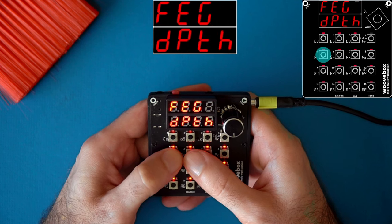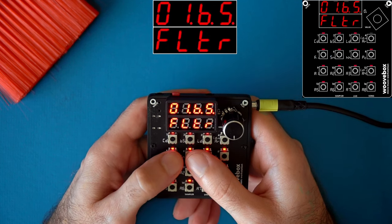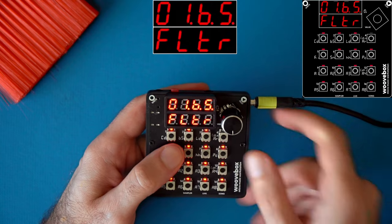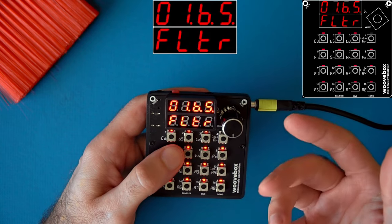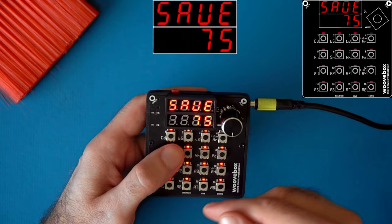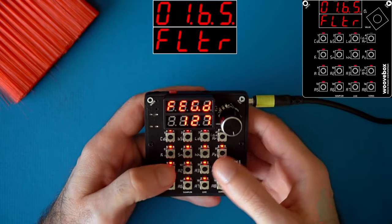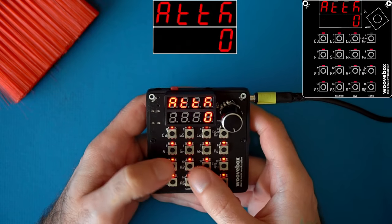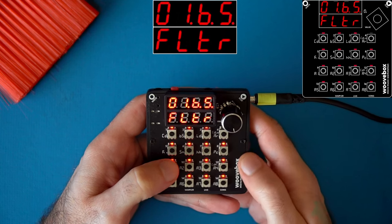The next one is the filter envelope generator depth. This is how much the filter envelope generator will affect the filter. With a value of 0, the filter envelope will not affect the filter at all. And with a value of 127, the filter envelope, which is below, will affect the filter fully.